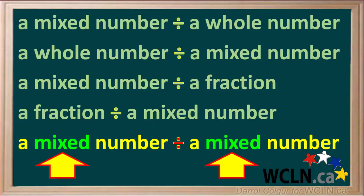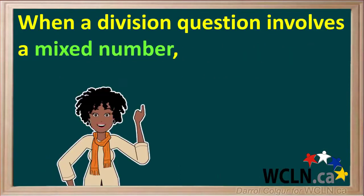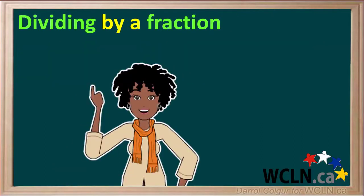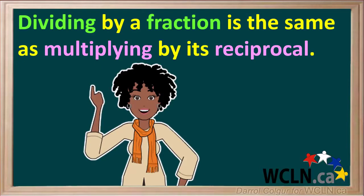When working with mixed numbers, there are two rules we always need to remember. The first rule is: any time a division question involves a mixed number, we always start by converting it to an improper fraction. The other rule is that dividing by a fraction is the same as multiplying by its reciprocal. Using these two rules, we can do any divisions involving mixed numbers.